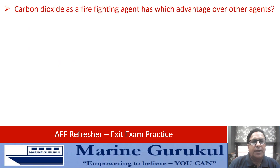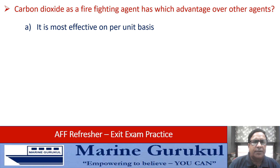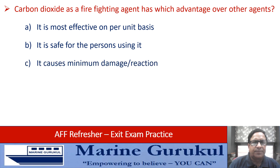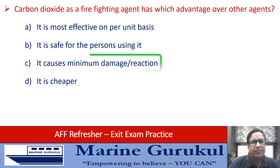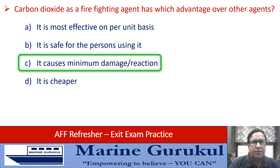Carbon dioxide as a firefighting agent has much advantage over other agents. Is it most effective on a per unit basis, safe for persons using it, causes minimum damage, or is cheaper? Of all these, the best answer is C — it causes minimum damage.